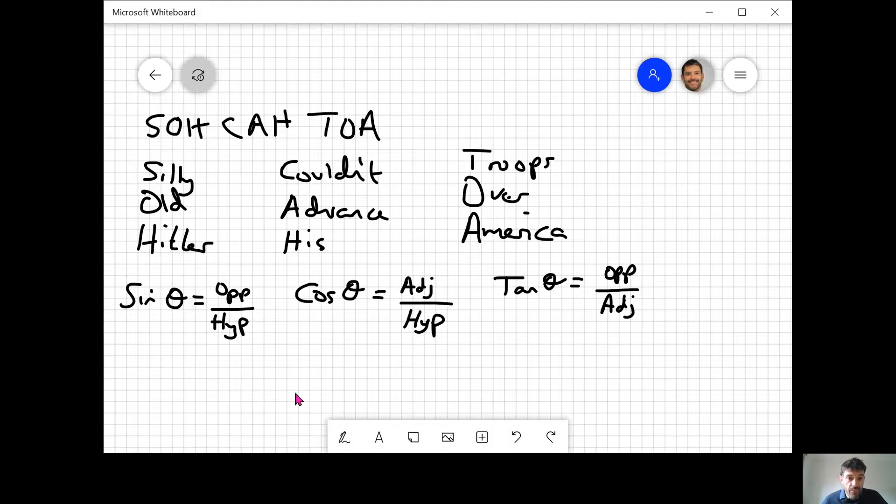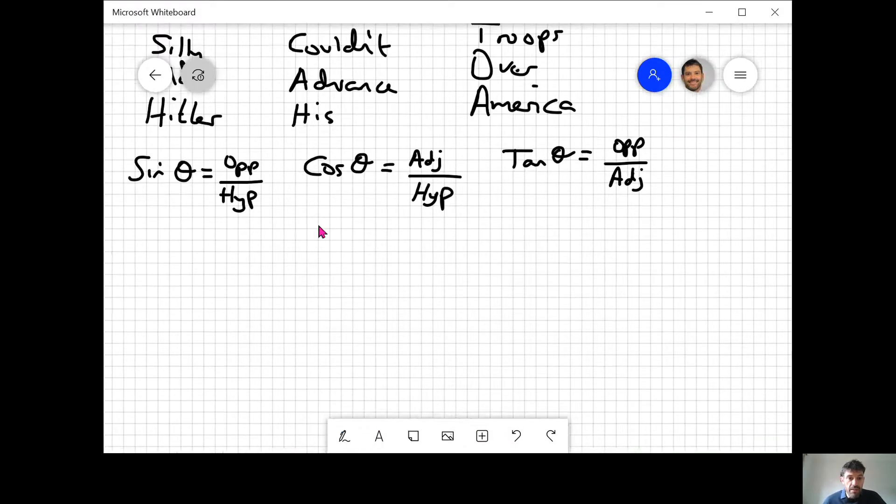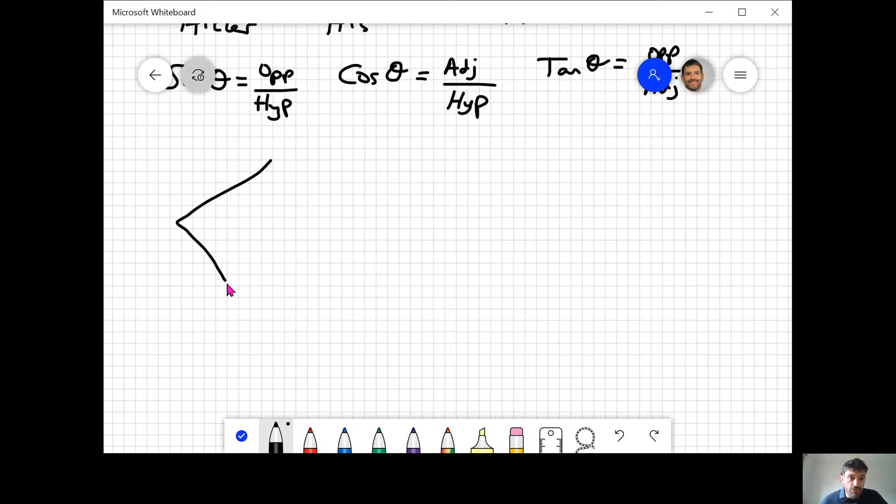Please pause the video and copy those down. I'm going to show you a couple of examples with right angle triangles. Please apologize for my non-straight lines. I'll draw a triangle: three centimeters over five centimeters. Step one...